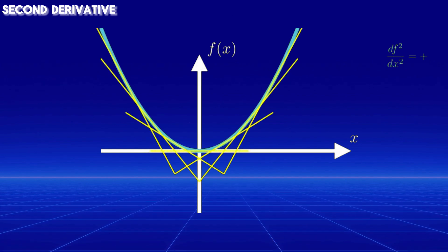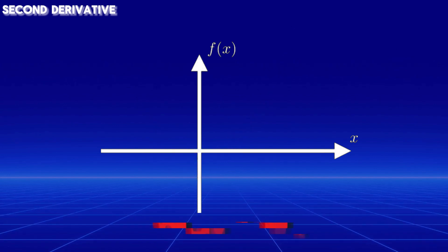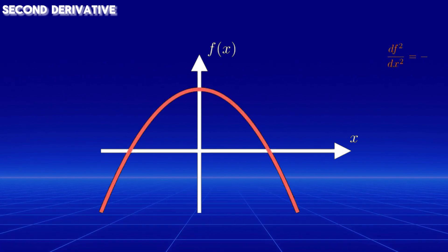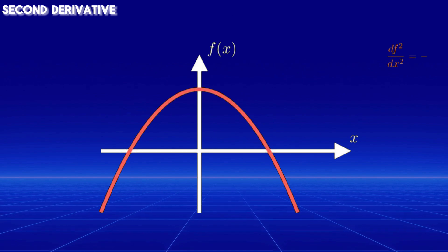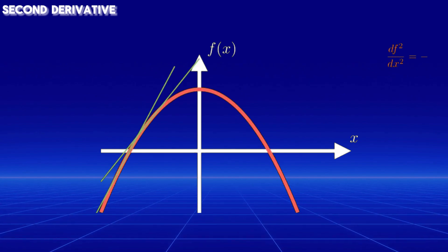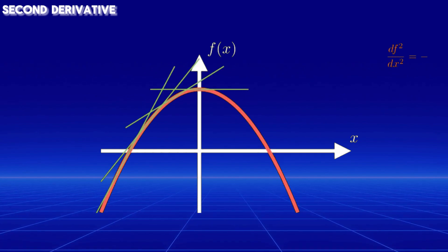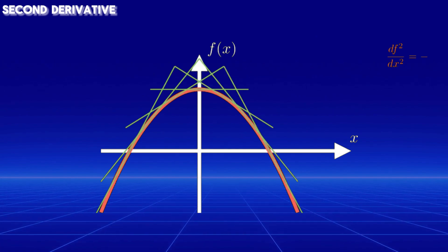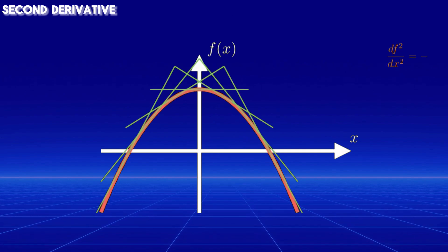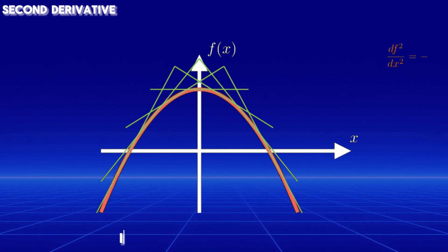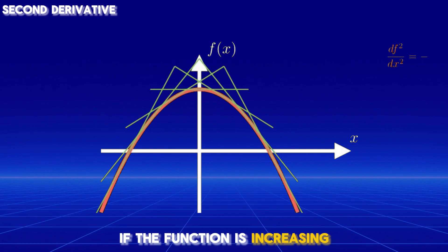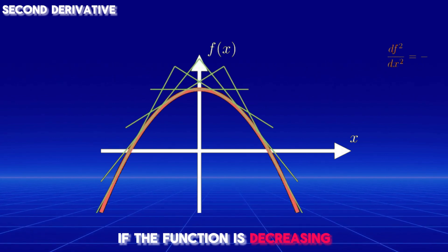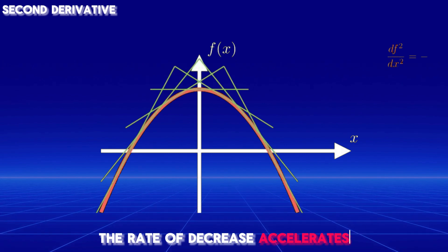A function with a negative second derivative is concave-down, meaning the graph bends downwards like an upside-down U-shape. As you move from left to right, where the function increases, the slopes of the tangent lines decrease, reflecting the slowing growth of the function. In other words, if the function is increasing, it's doing so more slowly, and if the function is decreasing, the rate of decrease accelerates.